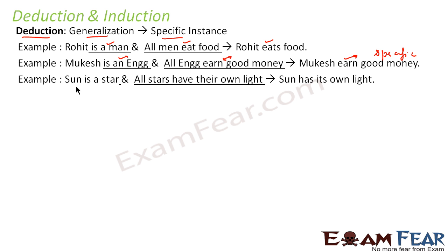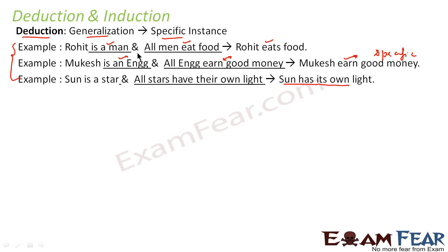Let's take one more example. Sun is a star is a general statement. All stars have their own light is a general statement. We combine these two statements to get the specific statement that the Sun has its own light. So from general statements we derive specific instances, and this is called deduction.